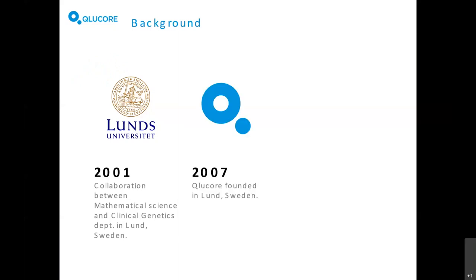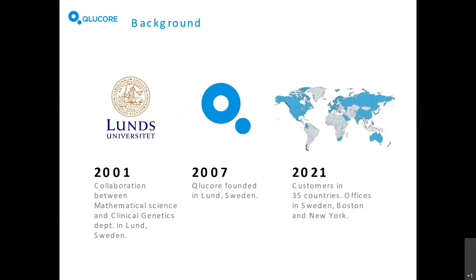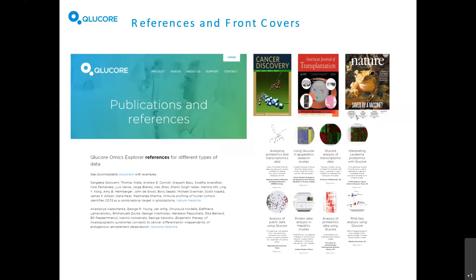First some short background. CluCore was started about 10 years ago in Lund in Sweden. We've got customers in around 35 countries. We sell mostly in Western Europe and in North America but we also have distribution in large parts of the world. If you would like to read more you can go to our web page where there are references, case studies and other useful information.